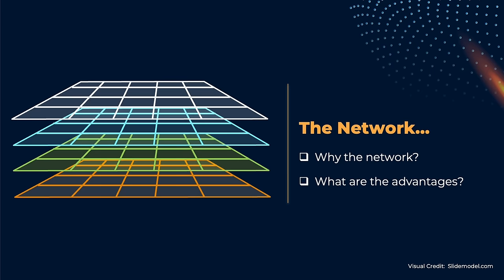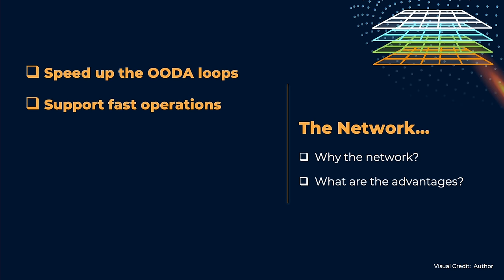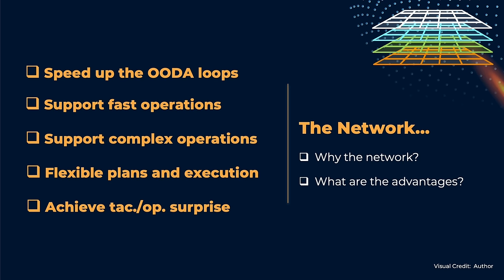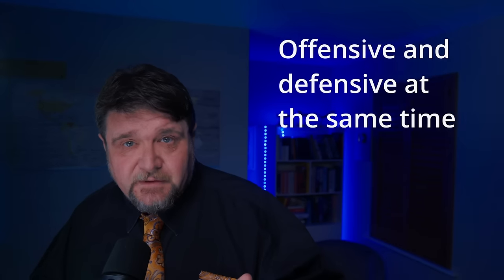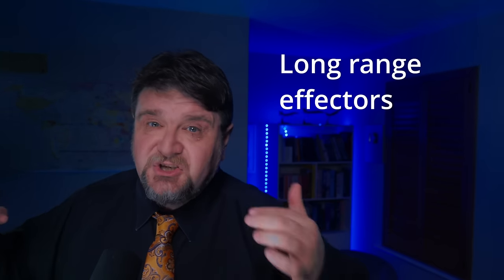The main purpose of the network is to provide all actors involved with the information and assets necessary to move very quickly through the OODA loop and keep the initiative while maintaining the opponent off balance. The network is built to support fast-paced and complex operations — it is both offensive and defensive. It is designed for planning and re-planning as necessary, and relies mostly on long-range weapons, achieving tactical surprise by using unexpected effectors from unexpected directions.